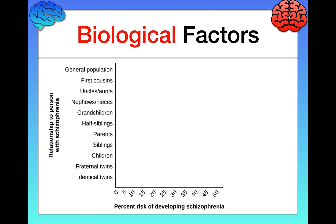You can take a look at my video on heritability and how psychologists assess nature versus nurture to learn more, but I'll keep things general for now. On the x-axis you have the percent risk of developing schizophrenia. On the y-axis you have the relationship to a person with schizophrenia. As we get further down the y-axis, we share more genetic material — with identical twins, for example, than with the general population.